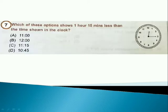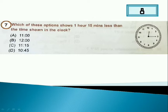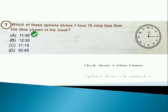Which of these options shows 1 hour 50 minutes less than the time shown in the clock? Answer is option A as clock shows 12 hours 15 minutes and option A shows 1 hour 50 minutes less.